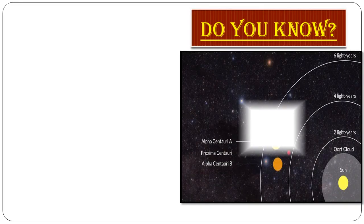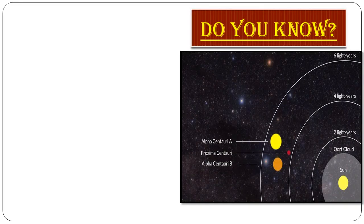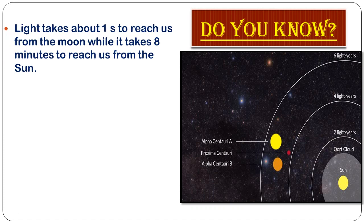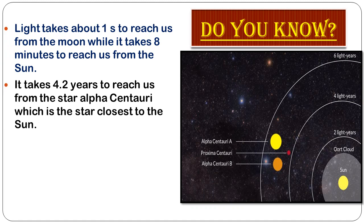Did you know that light takes about one second to reach us from the moon, while it takes eight minutes to reach us from the sun? And it takes 4.2 years to reach us from Alpha Centauri, which is the star closest to the sun. You can observe Alpha Centauri A and B alongside — these are the stars closest to our sun.